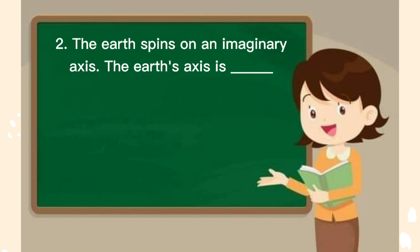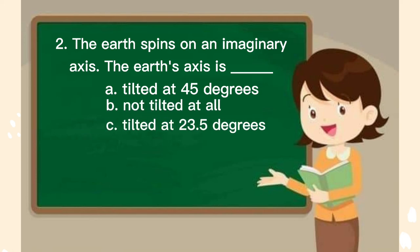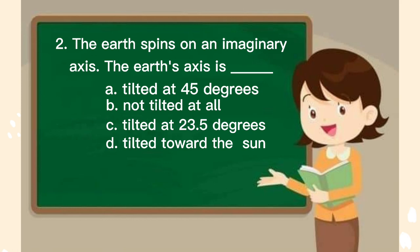Number 2. The earth spins on an imaginary axis. The earth's axis is: A. Tilted at 45 degrees, B. Not tilted at all, C. Tilted at 23.5 degrees, D. Tilted toward the sun. The correct answer is C.